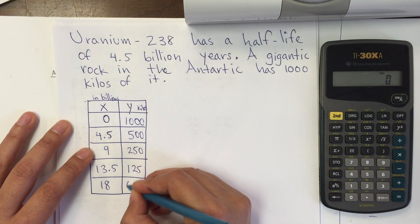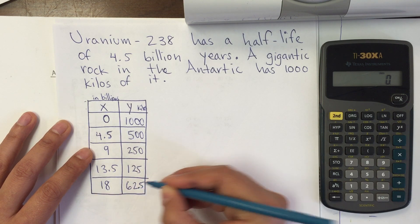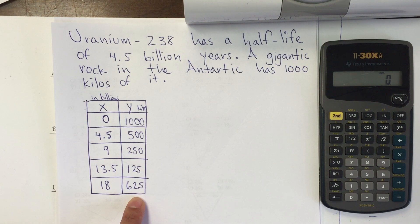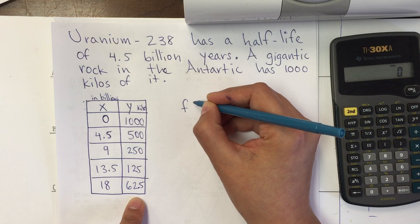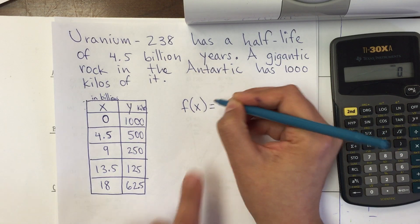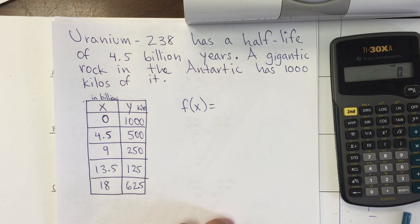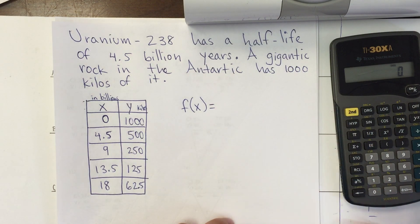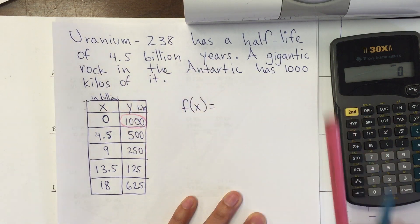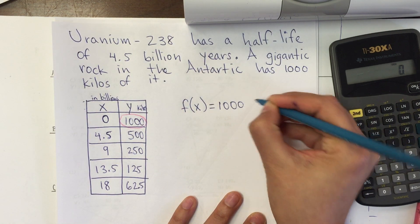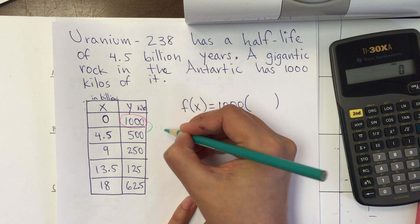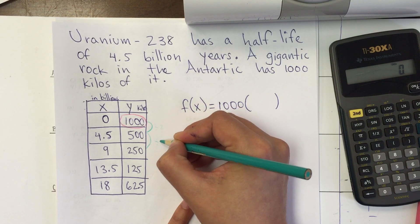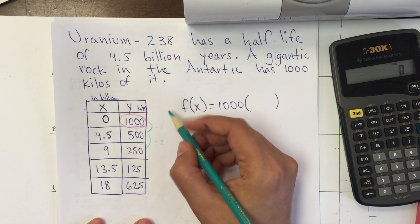After 13.5 billion years we have 62.5 kilograms. Now how do you write the function? It's getting easier by looking at previous assignments. We always have the initial point, which is 1,000, and we multiply by the base. Some people say they're dividing by 2, and that's true.